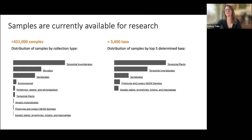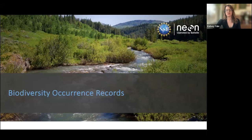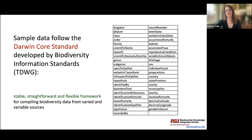We currently have over 421,000 samples representing over 3,400 identified taxa. We also have bulk samples with a lot of unlocked diversity within them, so the taxonomic spread in our collections is greater than what can be represented by the names attached to individual samples in the portal.